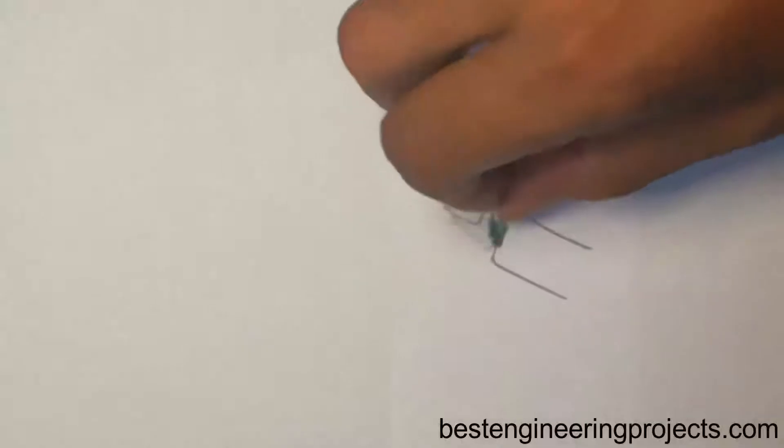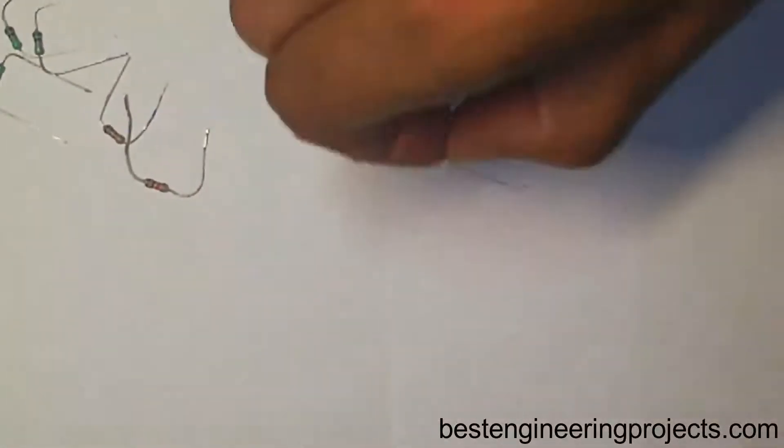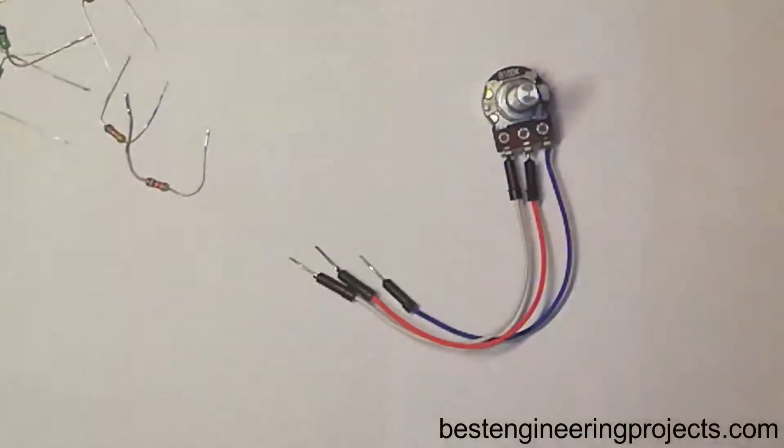Now let's talk about components required for automatic fence lightning with alarm. Three 10 kilo ohm resistors, two 1 kilo ohm resistors, one 470 ohm resistor, and one variable resistor of 50 kilo ohm.